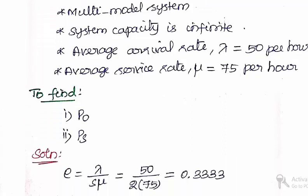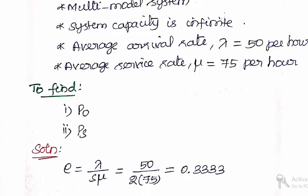We can start the problem by calculating the traffic intensity factor rho, which equals lambda over S times mu, equals 50 over 2 times 75, and will be arrived as 0.3333.